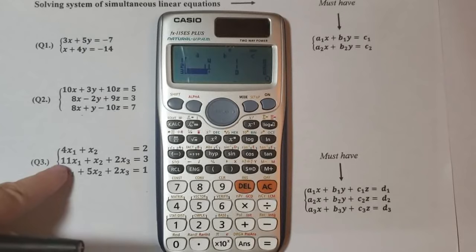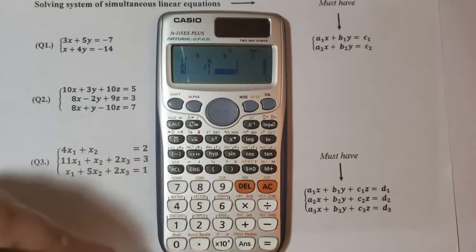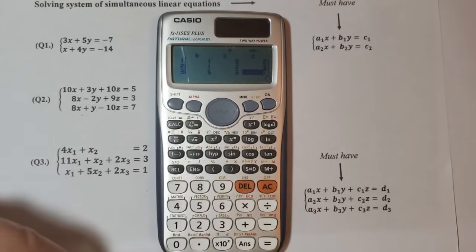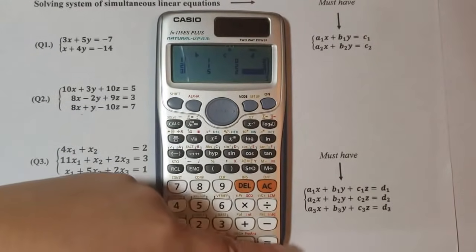1, 1, 5, equal, 2, equal, 1, equal. So to see the solution we will just press equal.